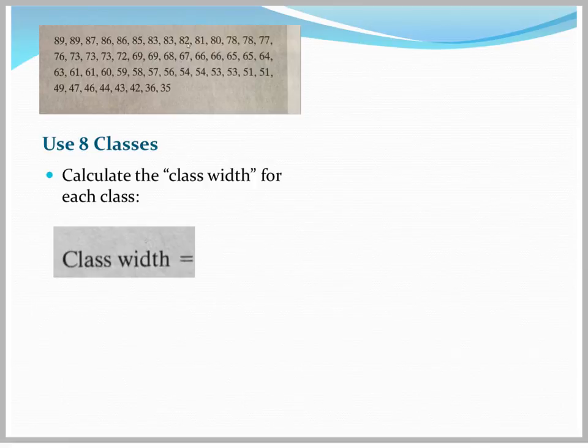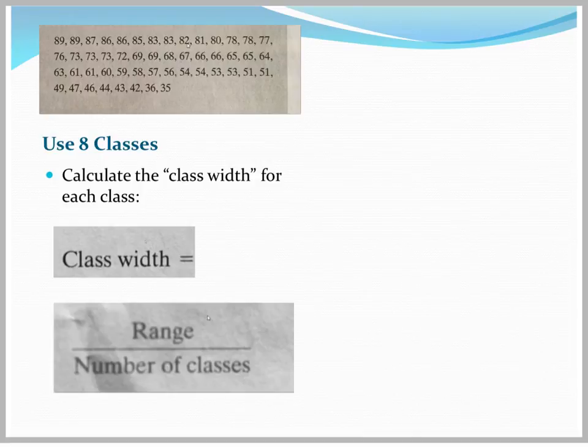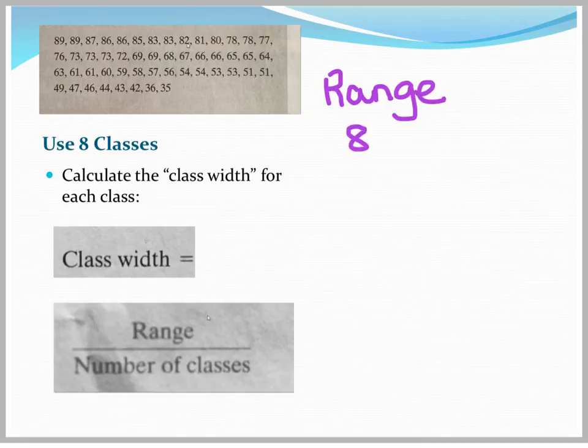The class width is found by using the range. We divide the range by the number of classes that we want to have. Recall that the range for any set of data is just the difference between the largest data in your data set and the smallest. So the range for our data in this case can easily be found by subtracting 89 minus 35. And our range here is going to be 54.